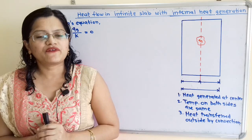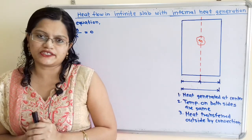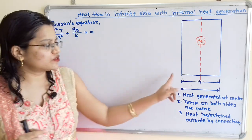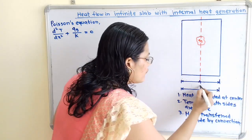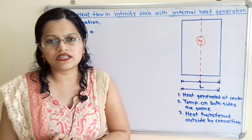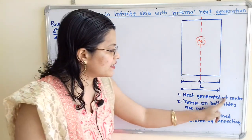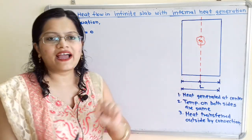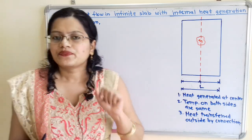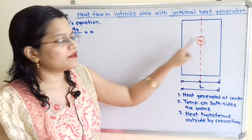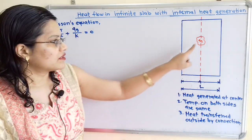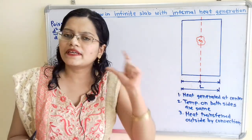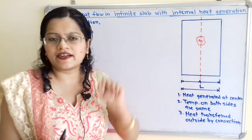We will first draw the diagram for the infinite slab with internal heat generation. This is the infinite slab with thickness L. Now the first condition: heat is generated at the center. At the center line we show the heat source, which generates heat QG per unit volume per unit time. This heat is conducted towards both sides of the slab equally because the heat source is located at the center.